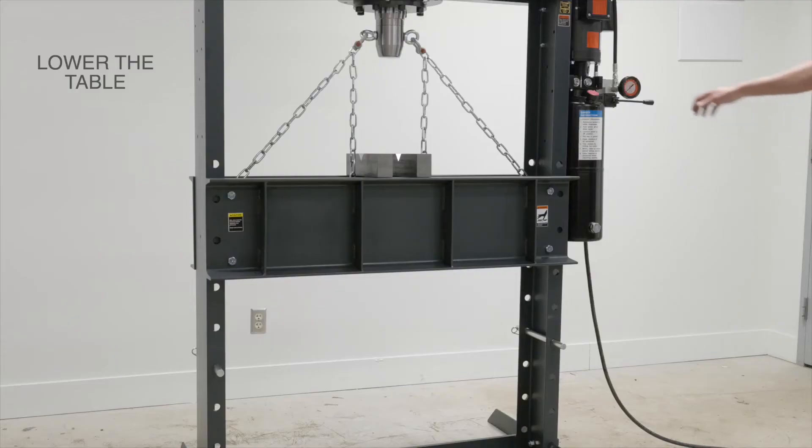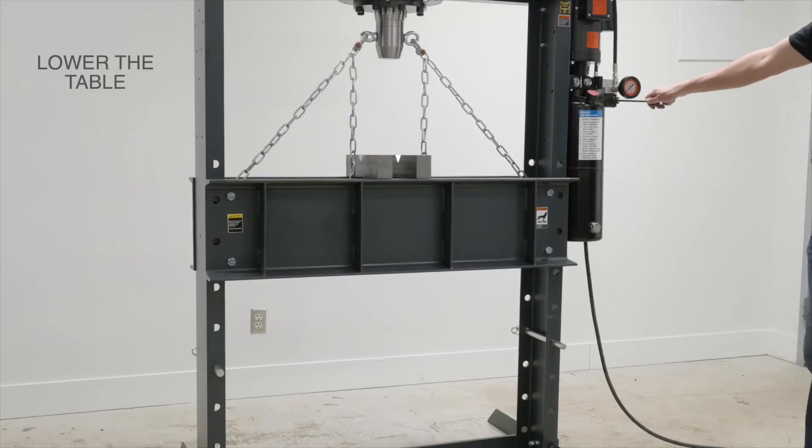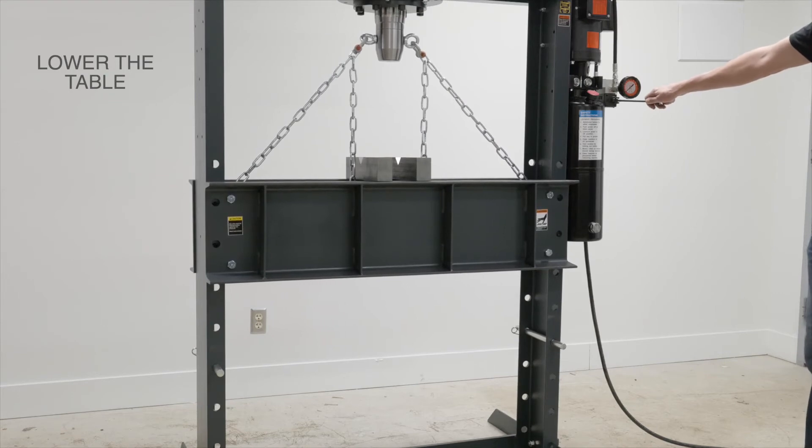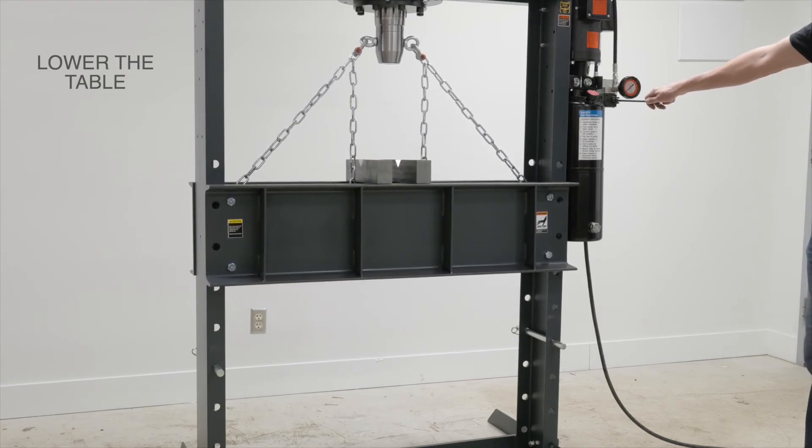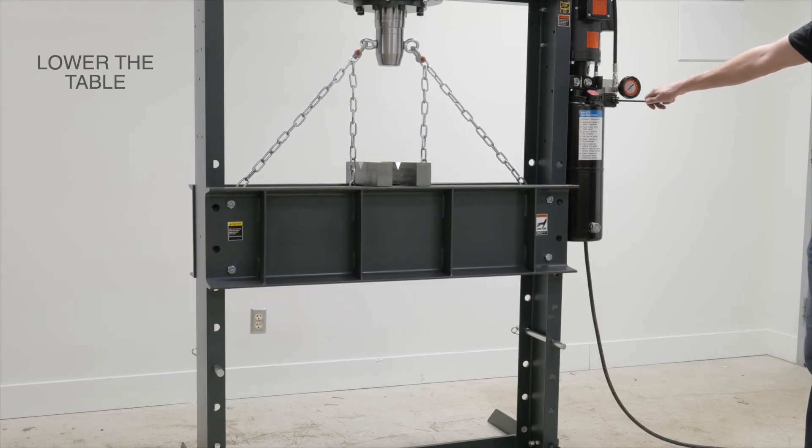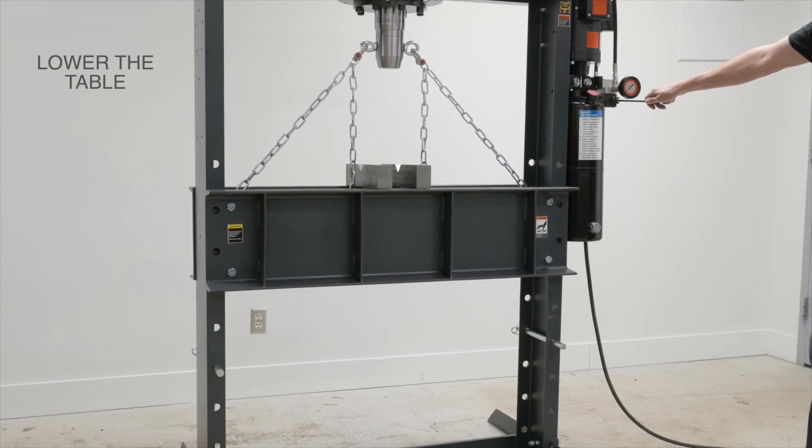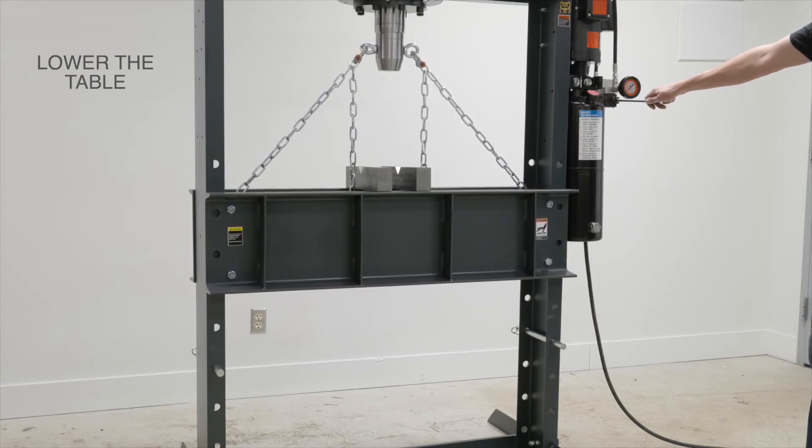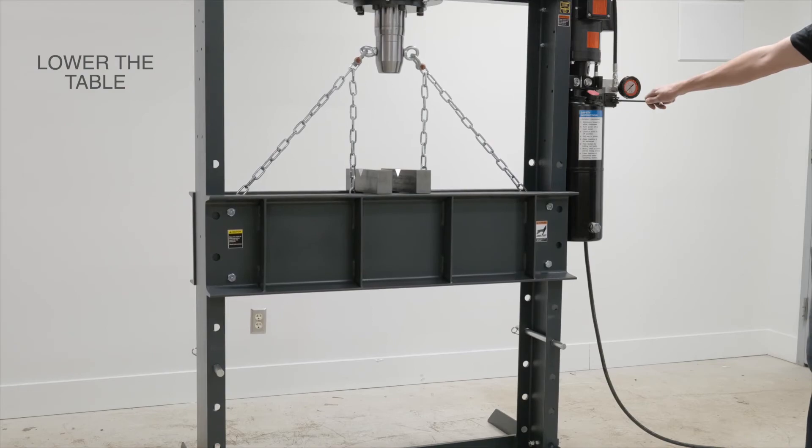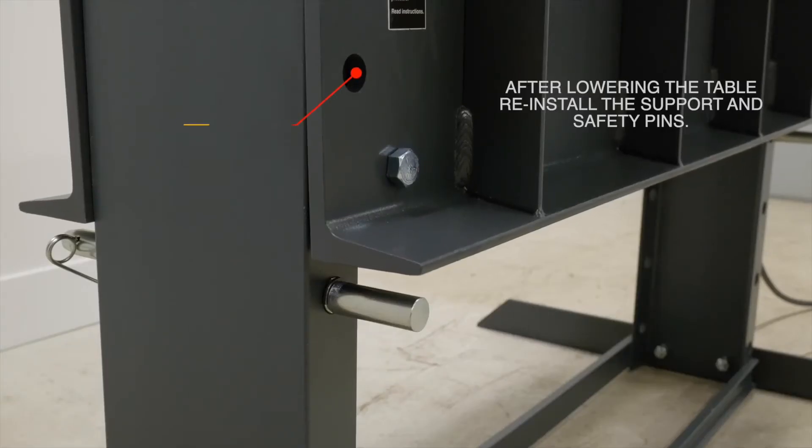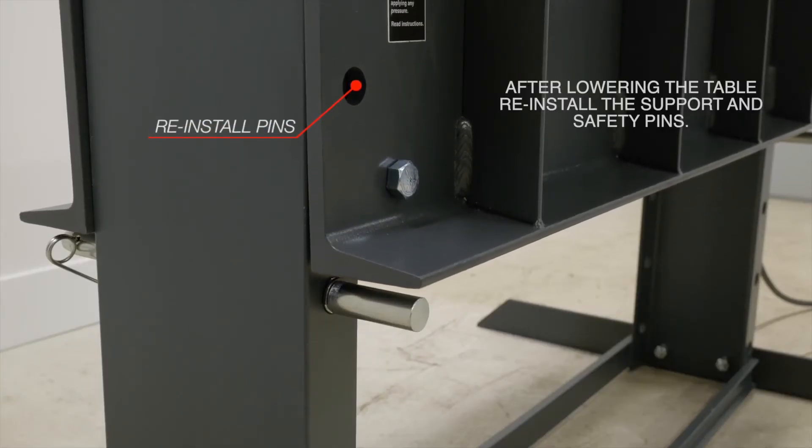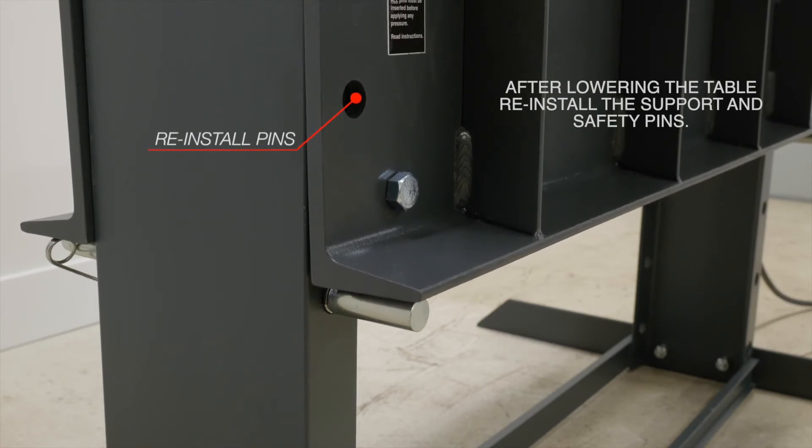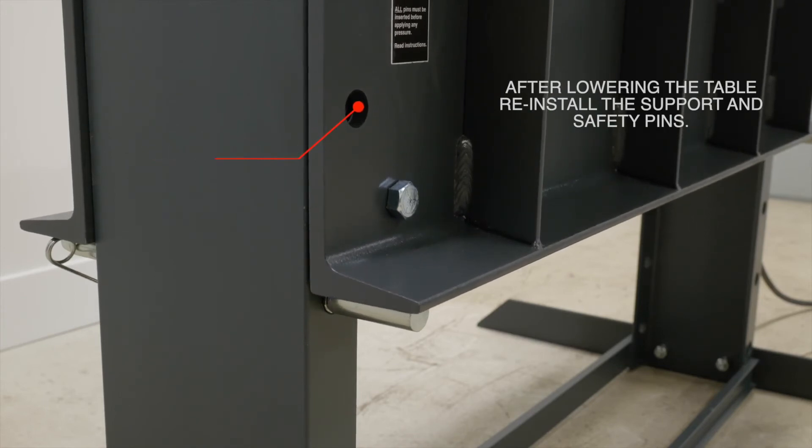Now we can lower the table safely. After lowering the table, reinstall the support and safety pins and then detach the chains.